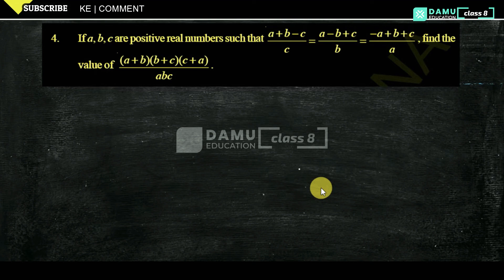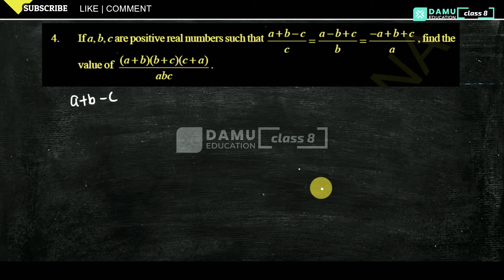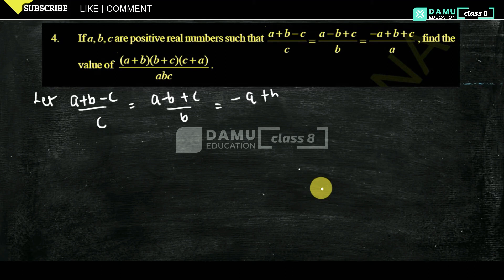So let's take all these values to be equal to some constant value x — we don't know what that value is, but we are going to call it x. So (a plus b minus c) divided by c equals (a minus b plus c) divided by b equals (minus a plus b plus c) divided by a equals x.